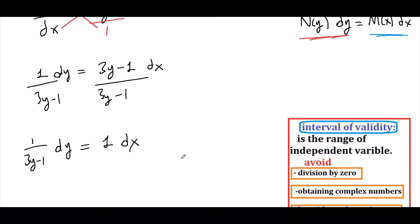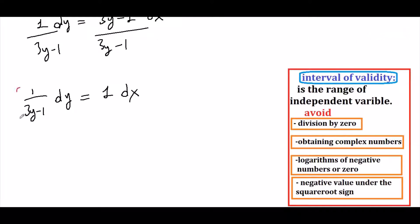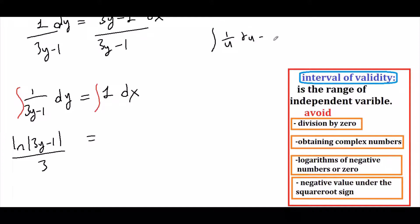Now x terms are on one side and y terms are on the other, so we can start integrating. The integral of 1 over (3y minus 1) is ln|3y minus 1| over 3. You can remember that the integral of 1/u du equals ln|u| times 1/u prime, or you can use u-substitution.